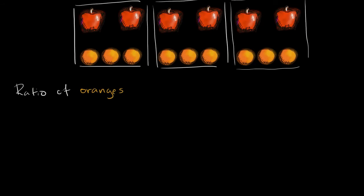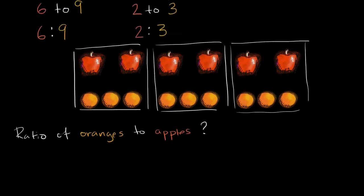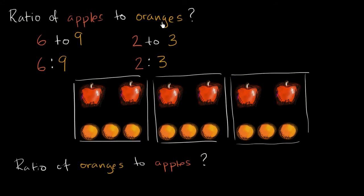Oranges to apples. And here we would essentially switch the numbers. The ratio of oranges to apples. Notice, up here we said apples to oranges, which is six to nine or two to three, which is an equivalent ratio. And here we're going to say the ratio of oranges to apples. So we've swapped these two, and so we're going to swap the numbers.